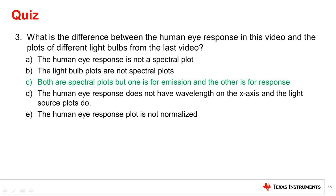So far, we have only examined normalized spectral plots, so both were normalized as well. However, the human eye senses light and so it has a spectral response, whereas light sources emit light and so have a spectral emission. So the correct answer is C.